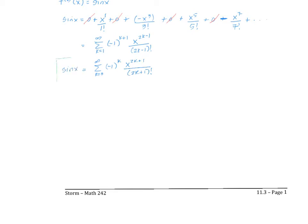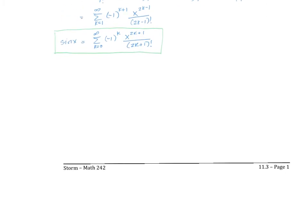Now I need the interval of convergence. I'll use the ratio test because I see factorials. I look at the limit of the absolute value of the series, which means the negative one disappears. Using the ratio test, I take the limit as k goes to infinity of the k plus one term divided by the k term. Putting k plus one in, this becomes x to the two k plus one plus one, divided by two k plus one plus one factorial.